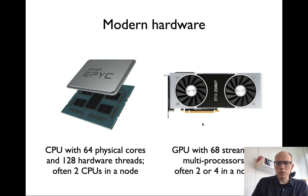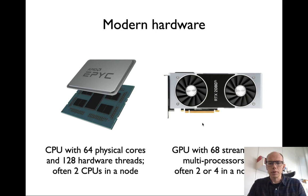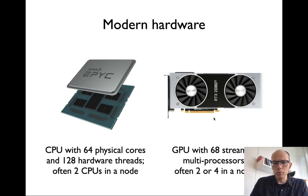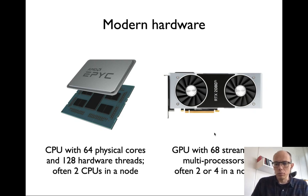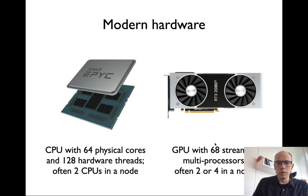On the right hand side is a picture of a GPU. GPUs were initially developed for games but are now used a lot for calculations, and GROMACS makes very good use of this with a highly optimized code. Shown here is an Nvidia RTX 2080 Ti, which has 68 streaming multiprocessors, each with many cores that can compute in parallel — giving very massive parallelization. You can often find two or four GPUs in a node, or a single one in your own workstation.